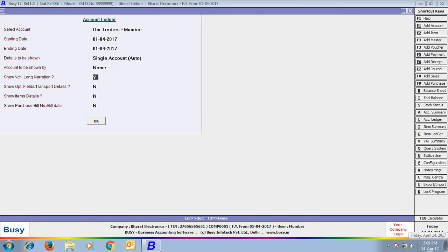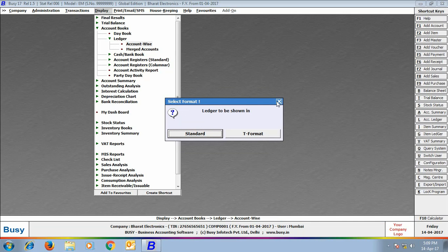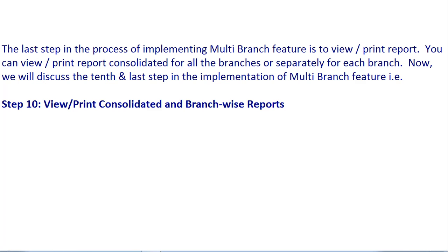We view the ledger for OMTraders as well — opening balance is 0. In the tenth and last step, we view and print consolidated and branch-wise reports. Logging in as admin (super user), we go to the balance sheet. You can view the combined report for all branches, or a separate report for each branch.